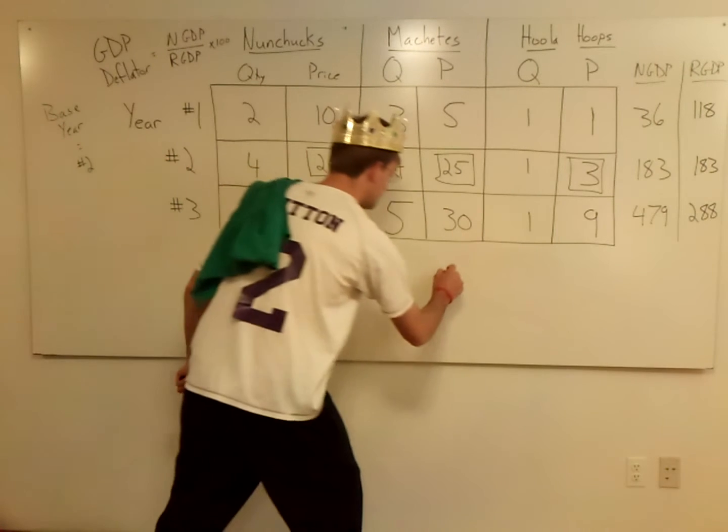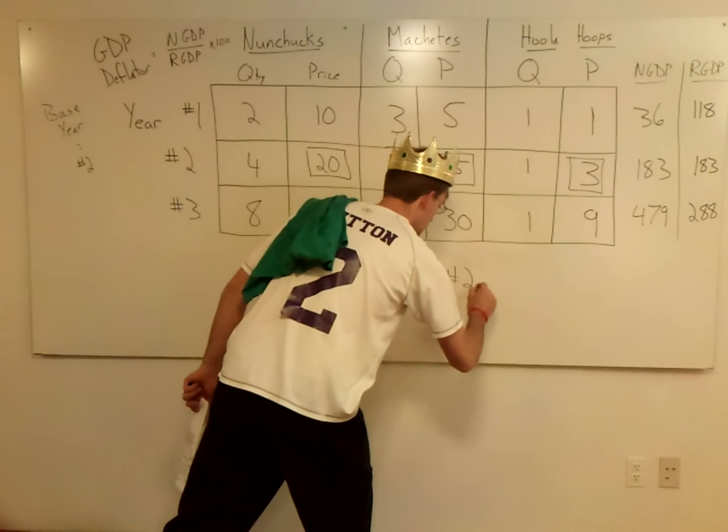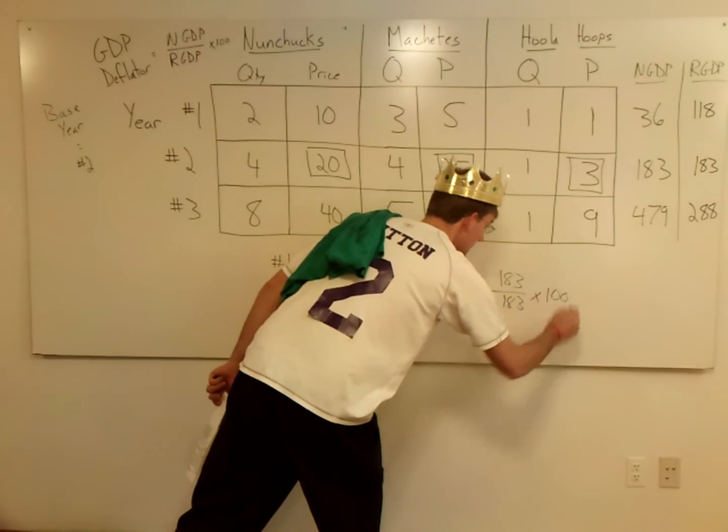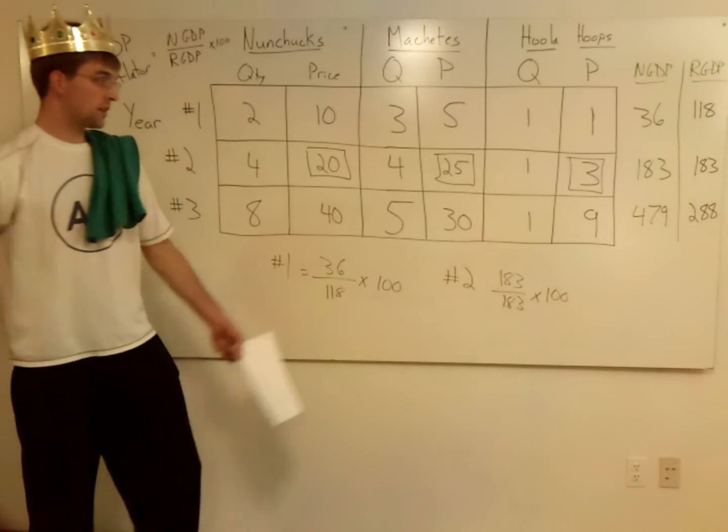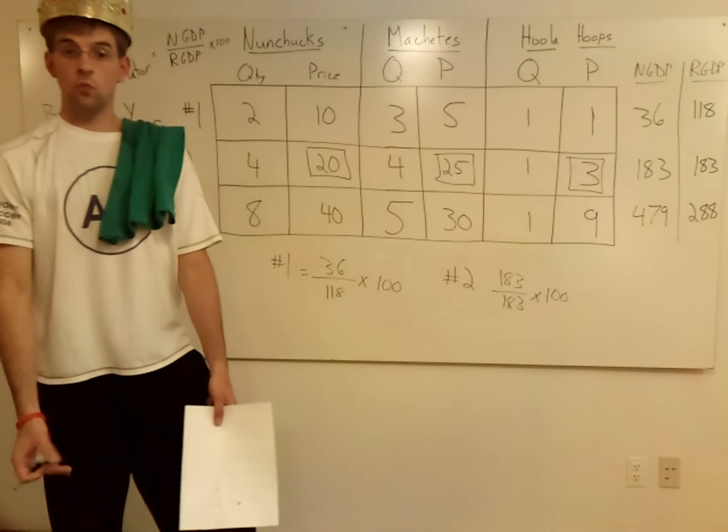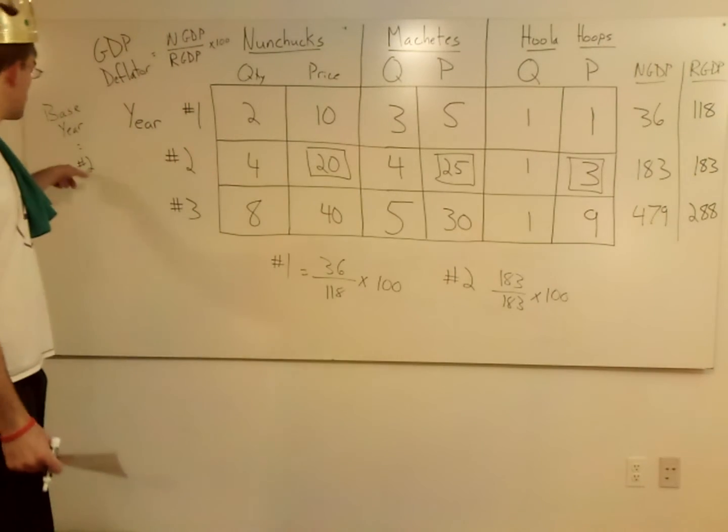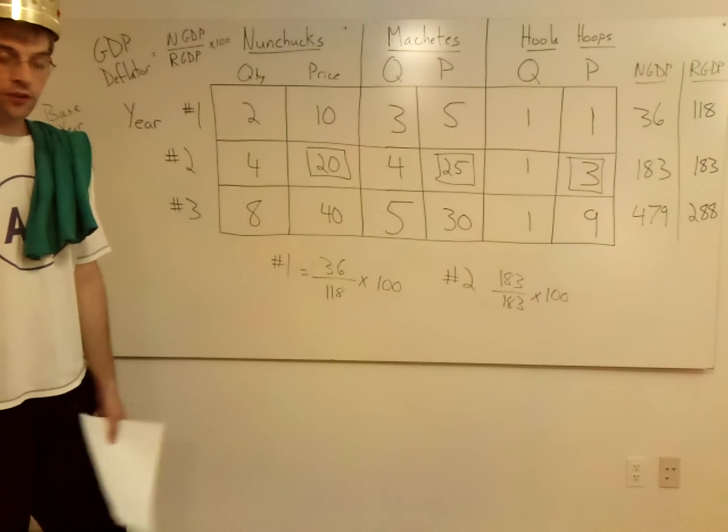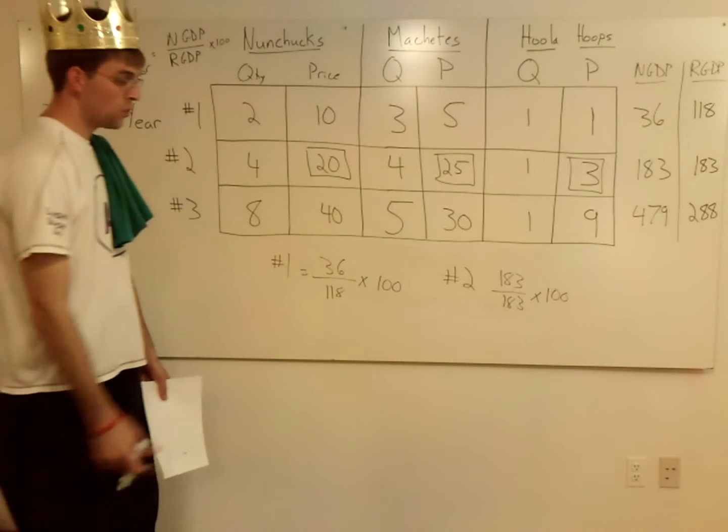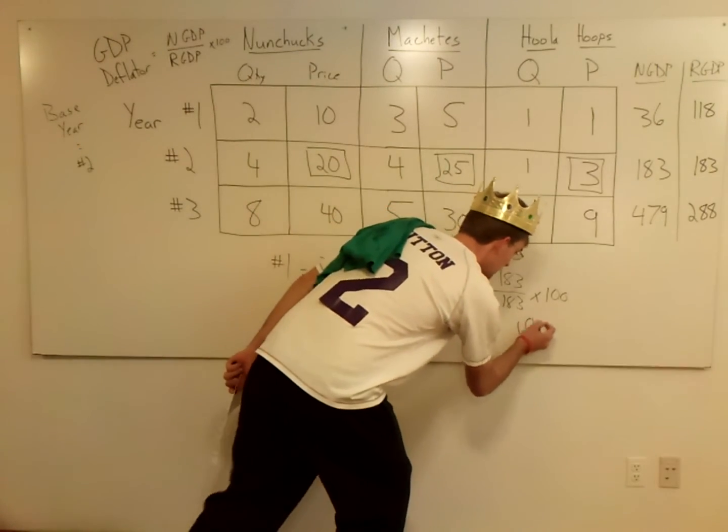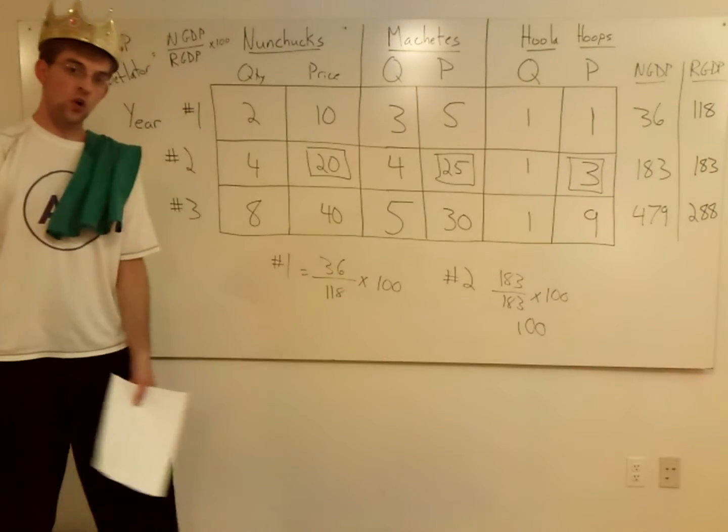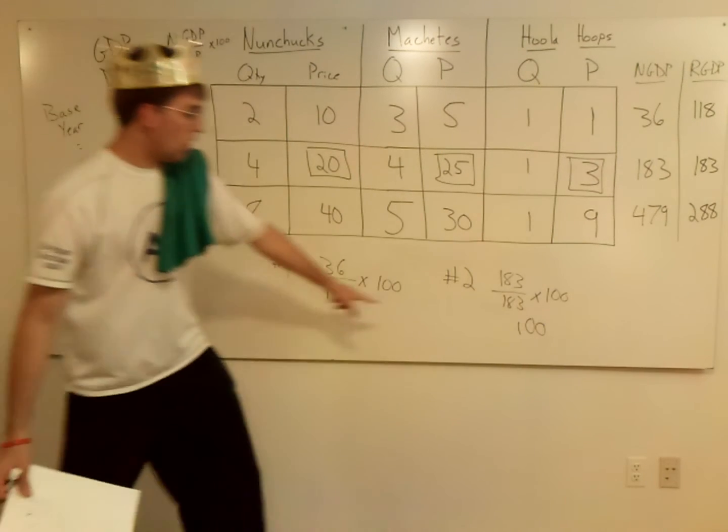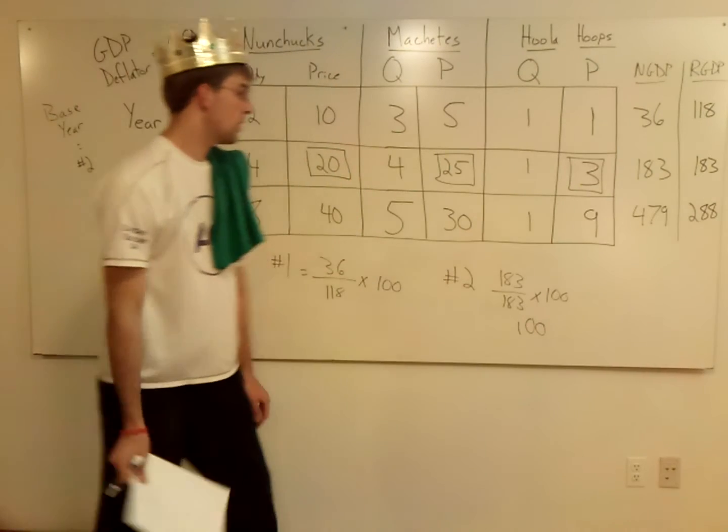Year number two, 183 over 183 times 100. Now, I'm going to stop for a second. One way to check yourself on these problems. If you know the base year is year two, what's going to be the GDP deflator? 183 over 183 is one. One times 100 gives you 100. And that's a good check for you to know that you're on the right track. Because base year, you're always going to have 100 for your GDP deflator.